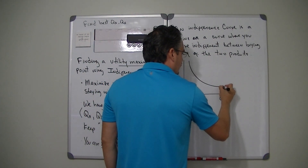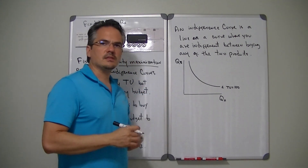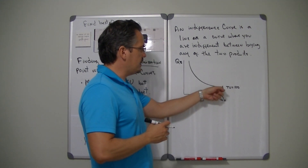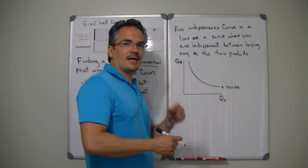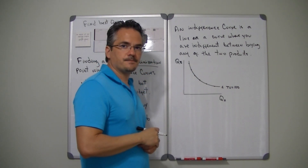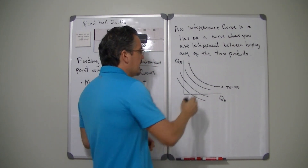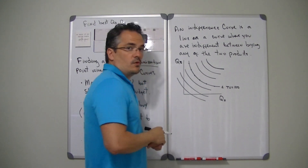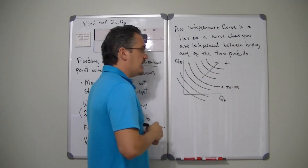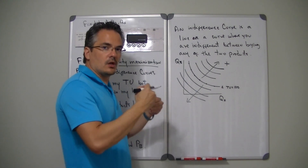Let's call this indifference curve 1 and it gives you a total utility of, say, 100. Remember the word utility means happiness or satisfaction. Each individual point on that indifference curve gives you exactly the same total utility. Any indifference curve below that one will give you less total utility, and any indifference curve above that one will give you a higher total utility.